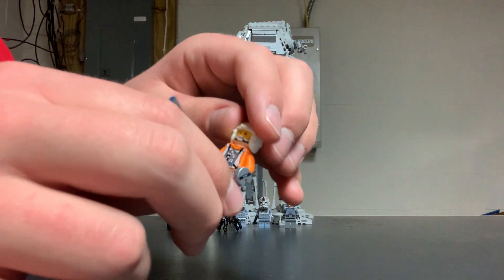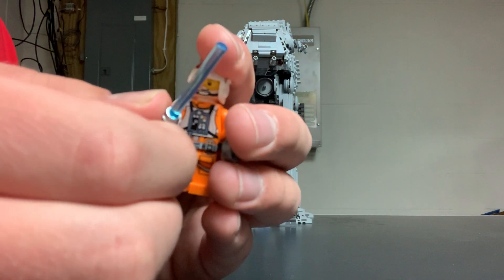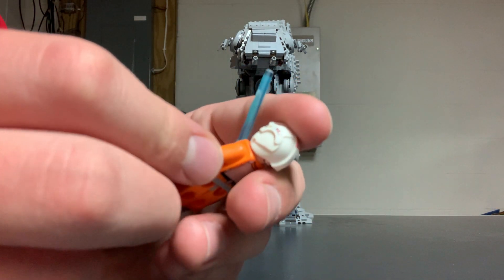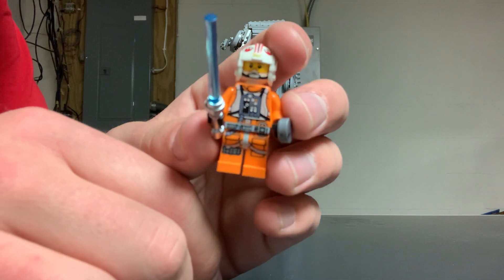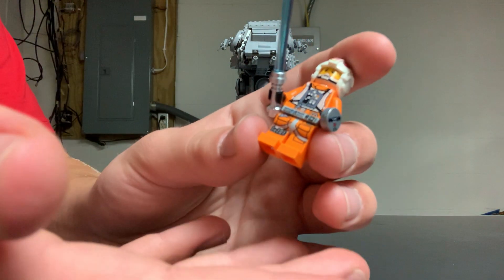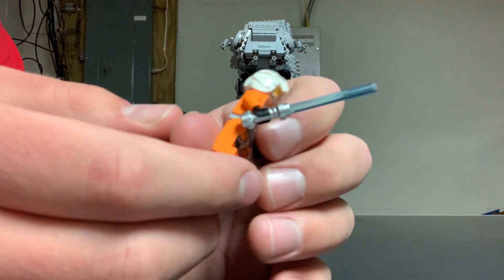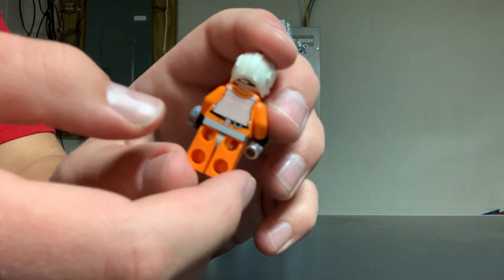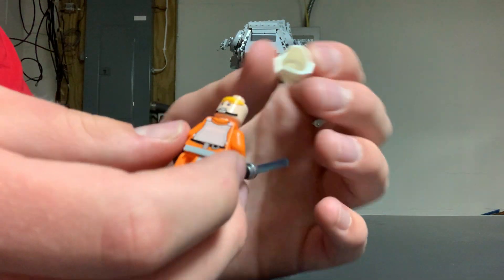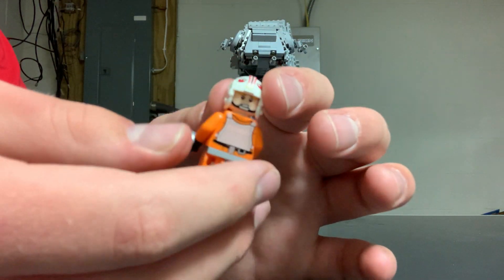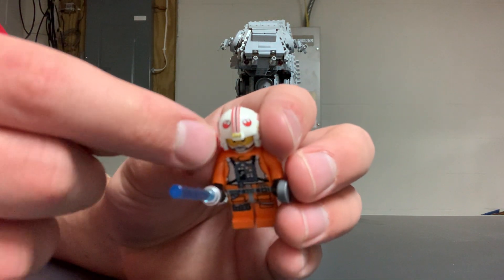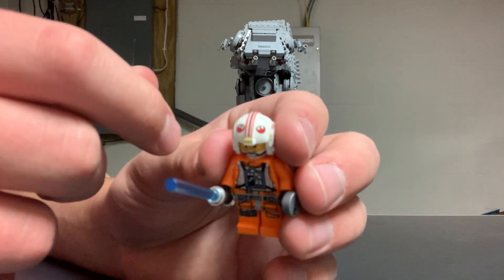And then we've got this version of Luke Skywalker with his trusty lightsaber and thermal detonator to blow up the AT-AT. We've got some nice torso printing and leg printing to make it look like what he does in Episode 5 when he's piloting the Snowspeeders to take down these AT-ATs. He's got nice back printing, another face with the goggles down and the goggles up with different expressions. And the helmet has some nice Imperial logos and red markings on it.